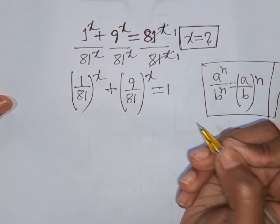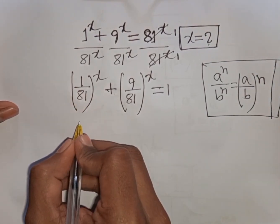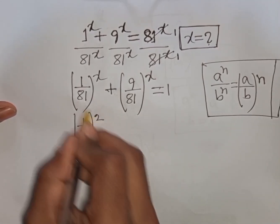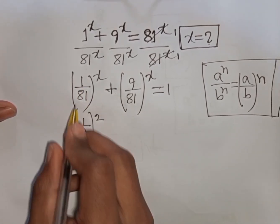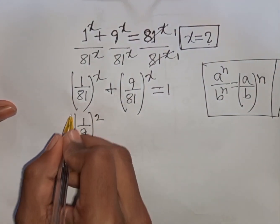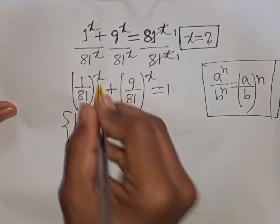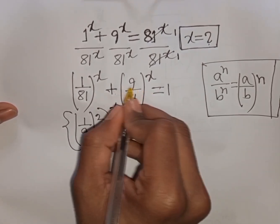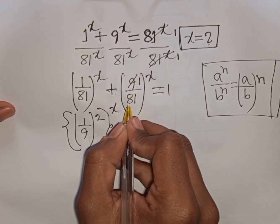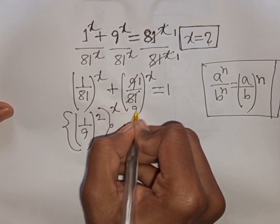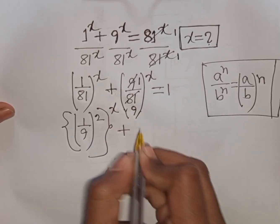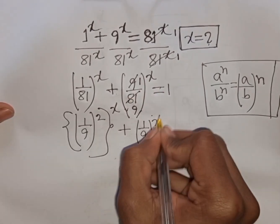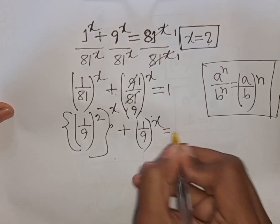We can write (9 over 81) bracket power x is equal to 1 divided by 1, that means 1. Now 1 over 81 can be written as (1 over 9) bracket power 2, since 1 squared is 1 and 9 squared is 81. So the first bracket can be written as (1 over 9) to the power 2x. Here 9 divided by 9 means 1 and 81 divided by 9 means 9, so (9/81) = 1/9. We have (1 over 9) bracket power 2x plus (1 over 9) bracket power x equals 1.